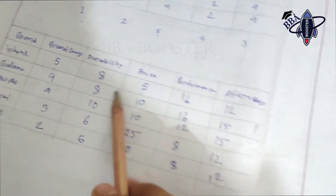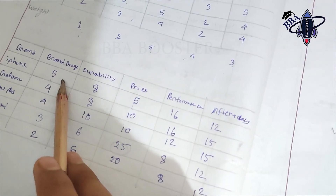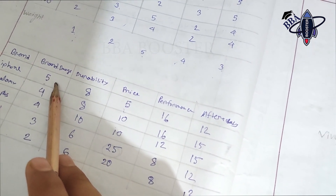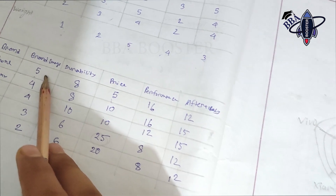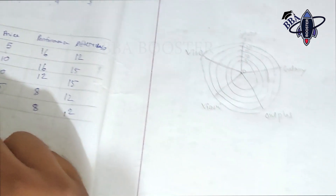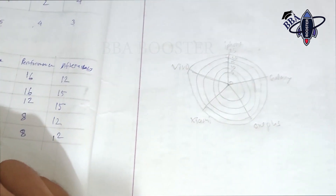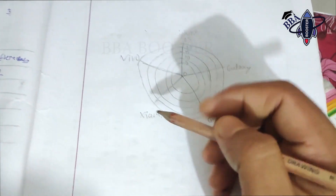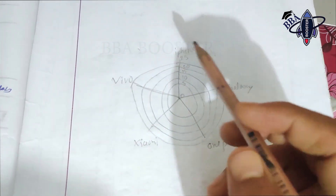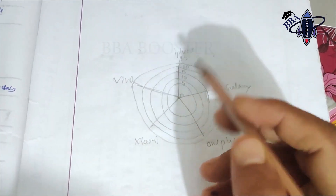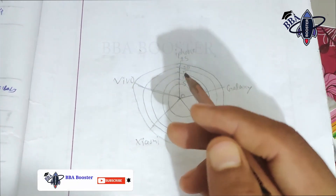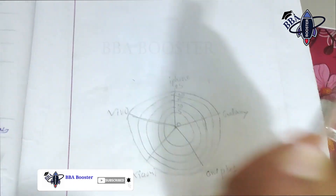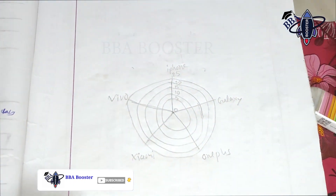The first brand I plot on the map is iPhone. I will use different colors for each brand — I will show you with three different colored pens to distinguish the brands clearly on the perceptual map.